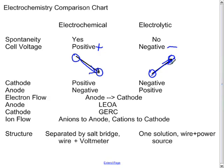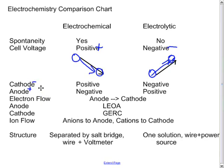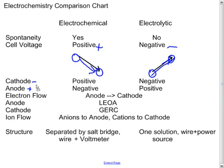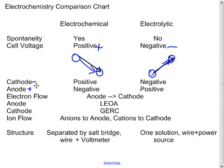The cathode in an electrochemical cell is positive, so cathodes are positive and anodes are negative in an electrochemical cell. However, these are reversed in an electrolytic cell — the cathode is negative and the anode is positive.